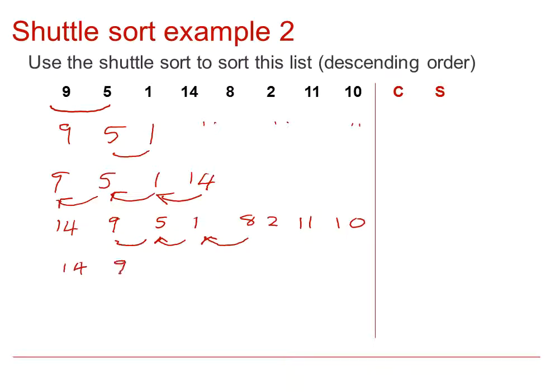We would therefore be, with a new list, 14, 9, 8, 5, 1, and then the 2, 11, and 10. We now start with the 2. The 2 will swap with the 1, but it will not swap with the 5, and so the pass ends there.